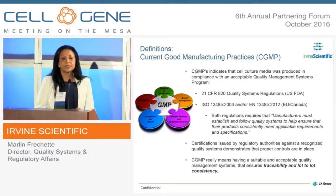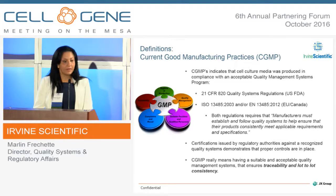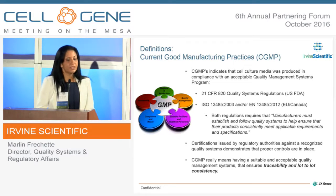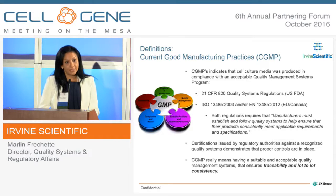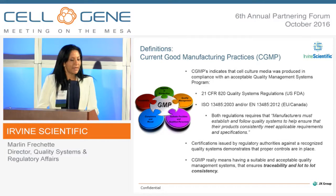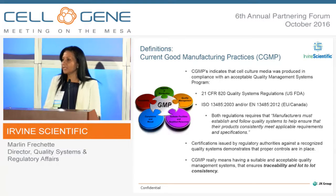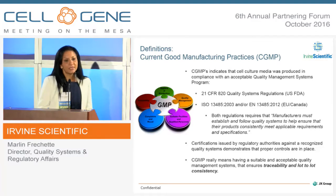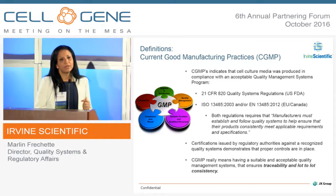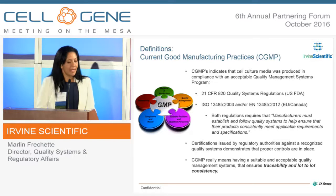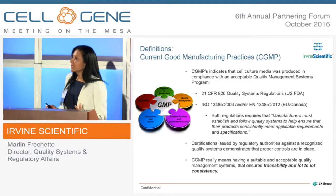Both regulations, whether the company is producing media, require sustaining one or the other standard. They must establish and follow very stringent controls and quality management systems that ensure the product will meet consistency from lot to lot. Certifications are issued by regulatory authorities against recognized quality systems. GMP really means having a suitable and acceptable quality management system in place — all steps must be followed, and the media you receive must have traceability and demonstrated consistency from lot to lot.